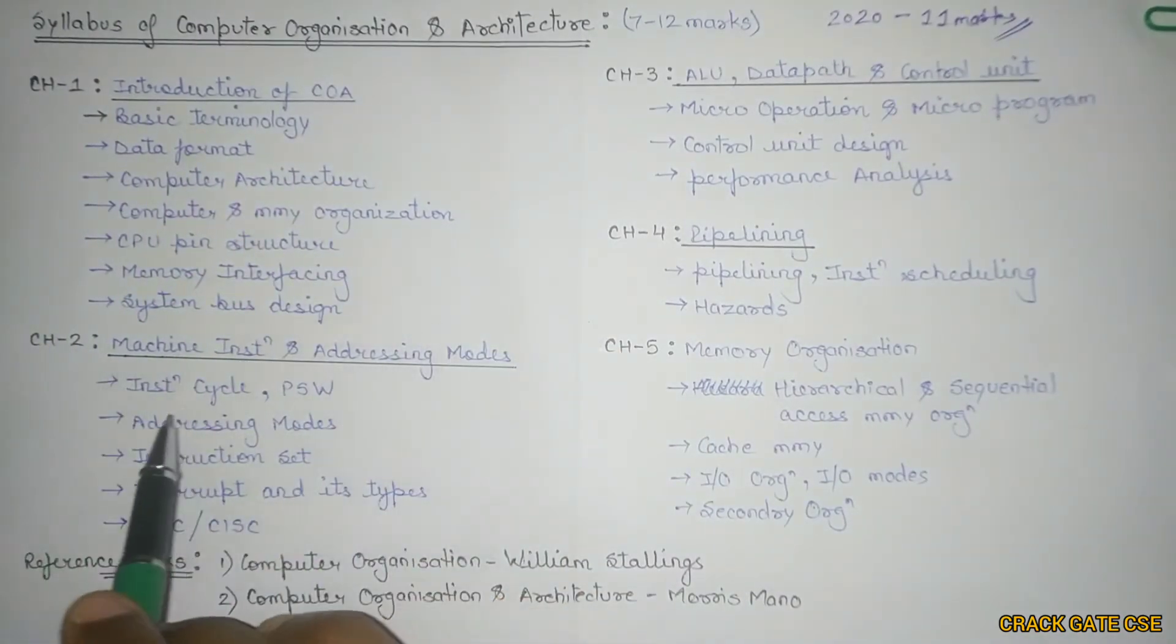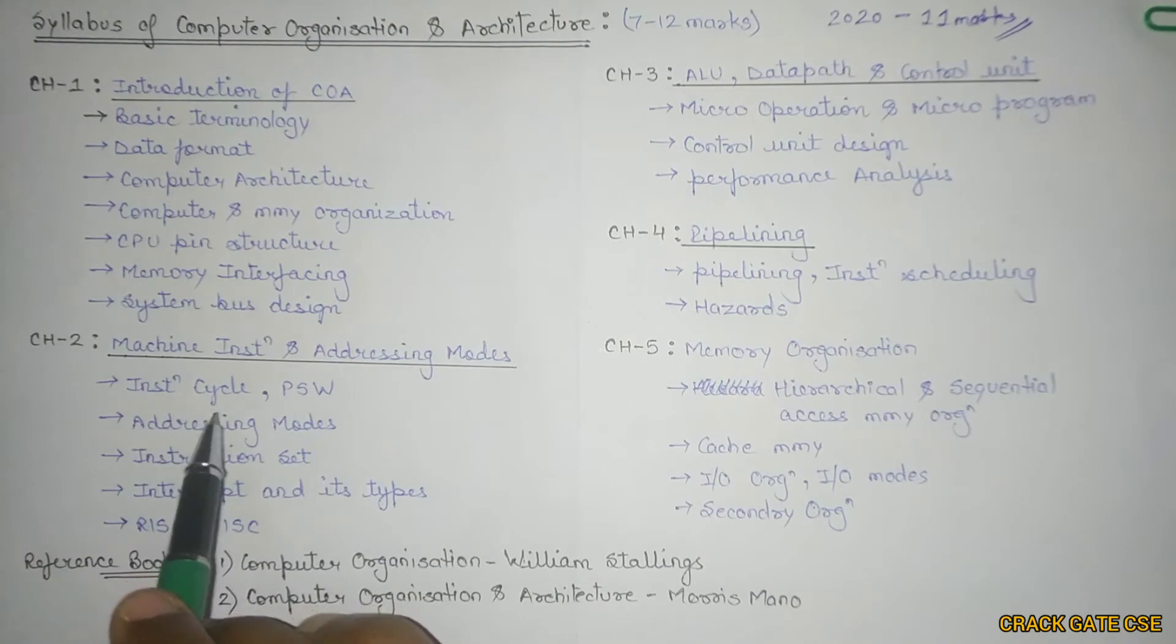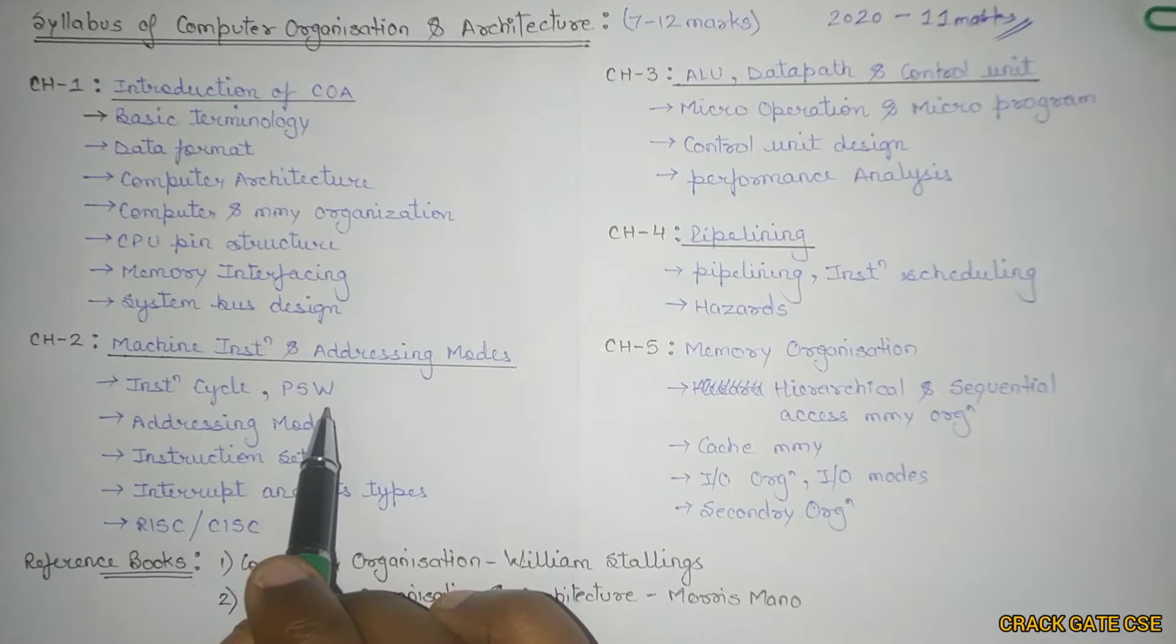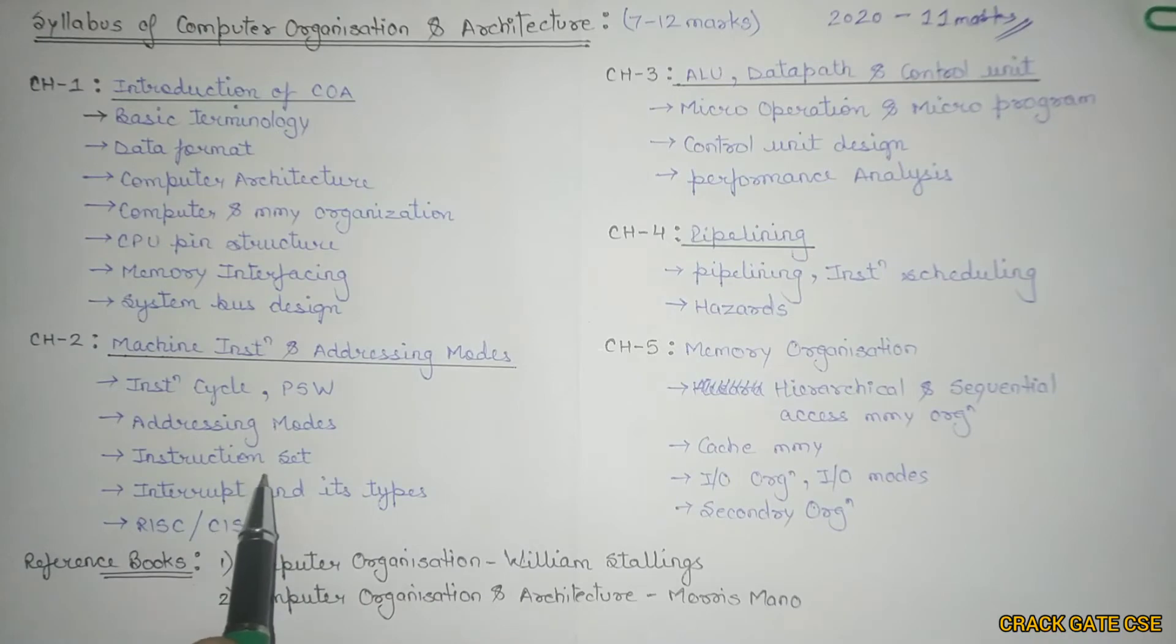In chapter two, we'll discuss instruction cycle. We'll understand one address instruction, two address instruction, three address, and four address instruction. In PSW, we'll understand what is accumulator and the different flags that we use. After understanding the flag, we'll move on to addressing modes. There are multiple addressing modes. We'll understand and try to implement all the addressing modes one by one.